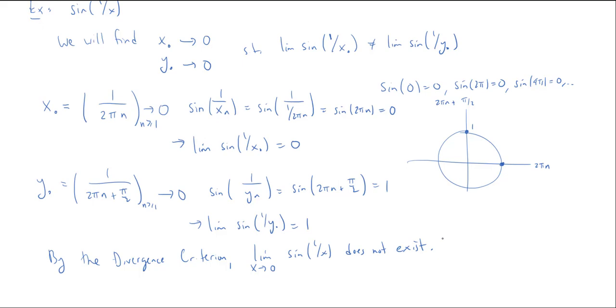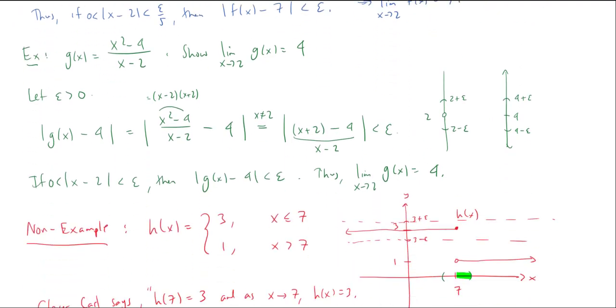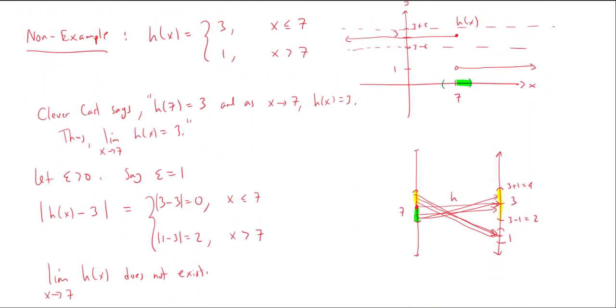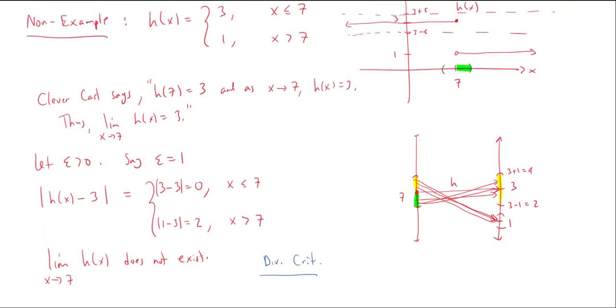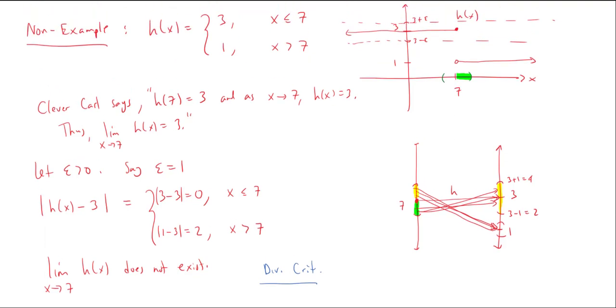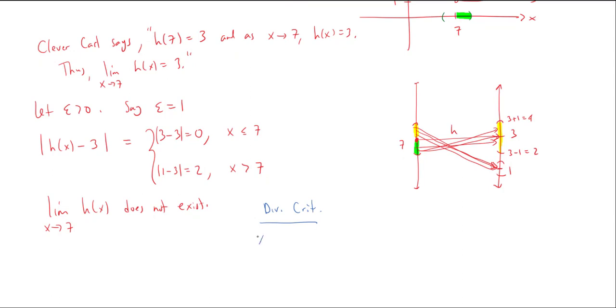And this is actually really handy. If we go back to our functional limits, we had an example, this H of X. It was equal to three up to when X equals seven, and then it was equal to one when X was greater than seven. If we just go back to this example and use the divergence criterion, we can very easily see that the limit as X approaches seven doesn't exist.